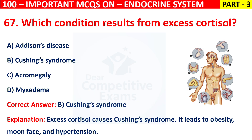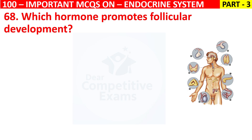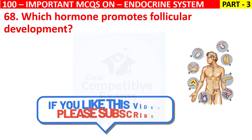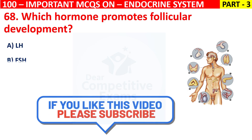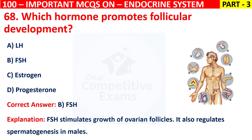Question 68: Which hormone promotes follicular development? Your options are LH, FSH, Estrogen, or Progesterone. The correct answer is B, that is FSH. FSH stimulates growth of ovarian follicles. It also regulates spermatogenesis in males.